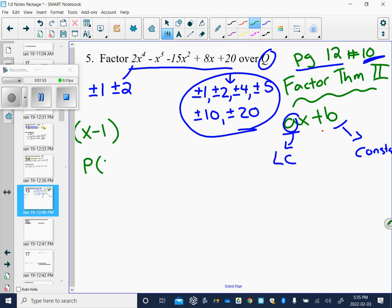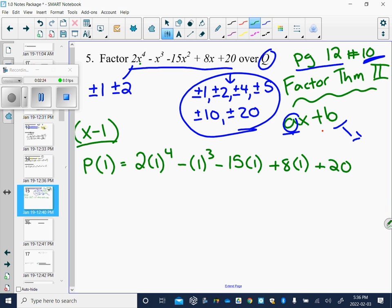And the factor theorem says that we can put in 1, remember the opposite of what we see, and if we put it into the polynomial and we get 0, it is indeed a factor. So let's see if this is a factor. 2 times 1 to the 4th minus 1 cubed minus 15 times 1 plus 8 times 1 plus 20.